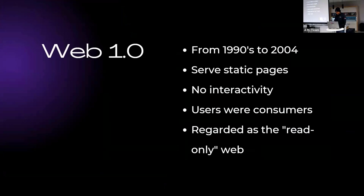Web 1.0 started from around the 1990s to 2004. Its main purpose was to serve static pages that were all hyperlinked to one another. There was no interactivity with these static pages as users were only consumers. To create anything on the internet, you would have to know how to code, so there was no easy way for the average person to create content or voice their opinions. It essentially was a decentralized collection of static web pages, and was therefore regarded as the read-only web.